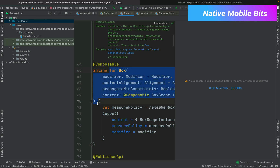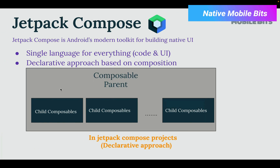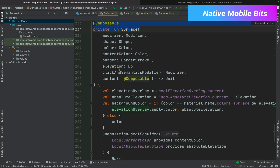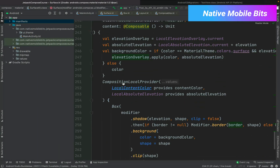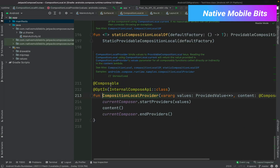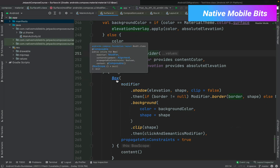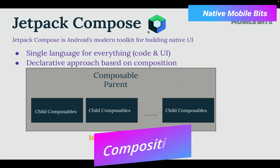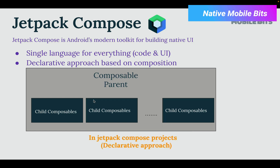Inside Surface we have other composables — Box is one composable, an independent unit and also a function. Box contains something called Layout, which is also a composable and an independent unit. All these small independent units together form one final composable called Surface. When small units form a larger unit together, that is called composition — that's why we have the name Jetpack Compose. Everything is a small independent composable, and we form those small units together to draw anything on the screen.